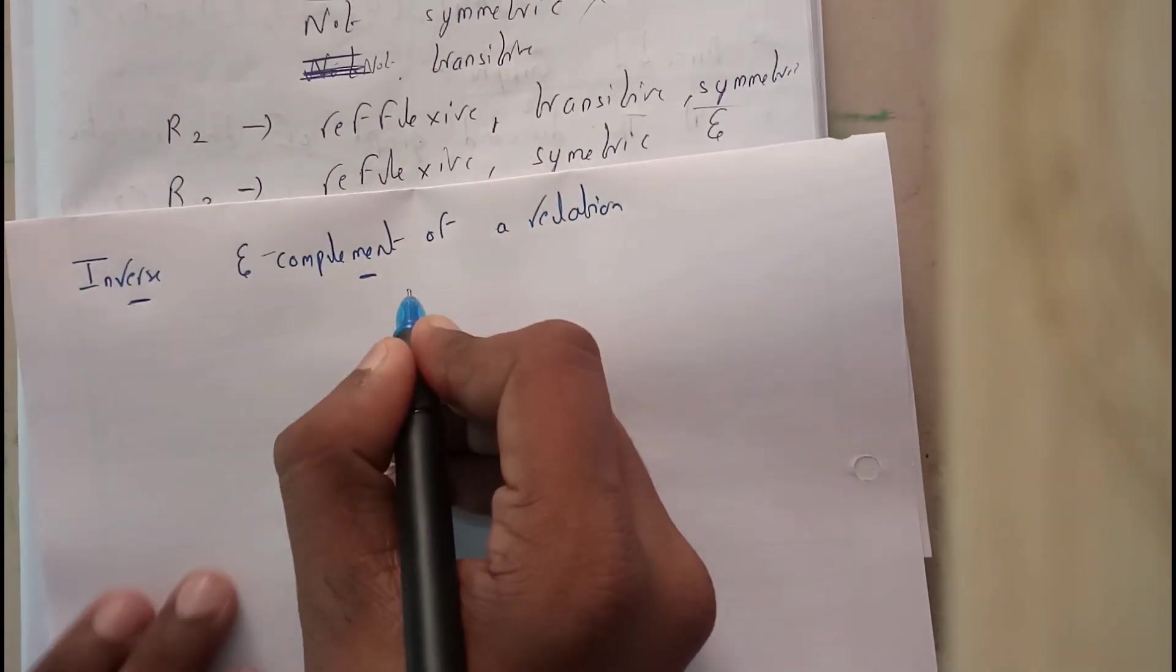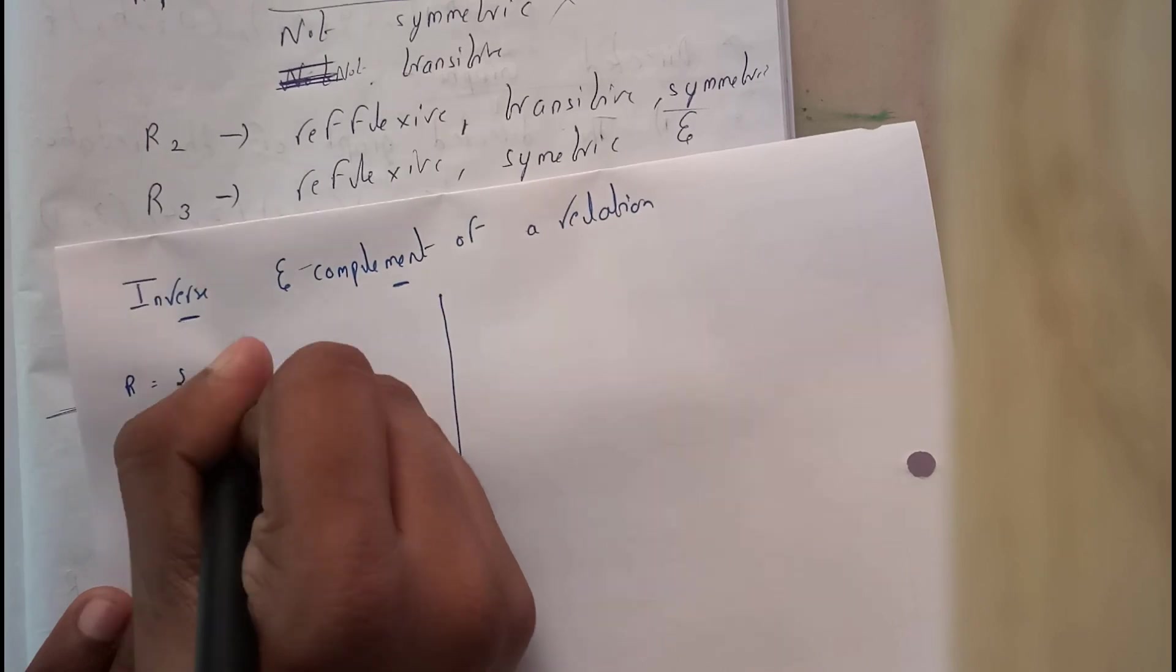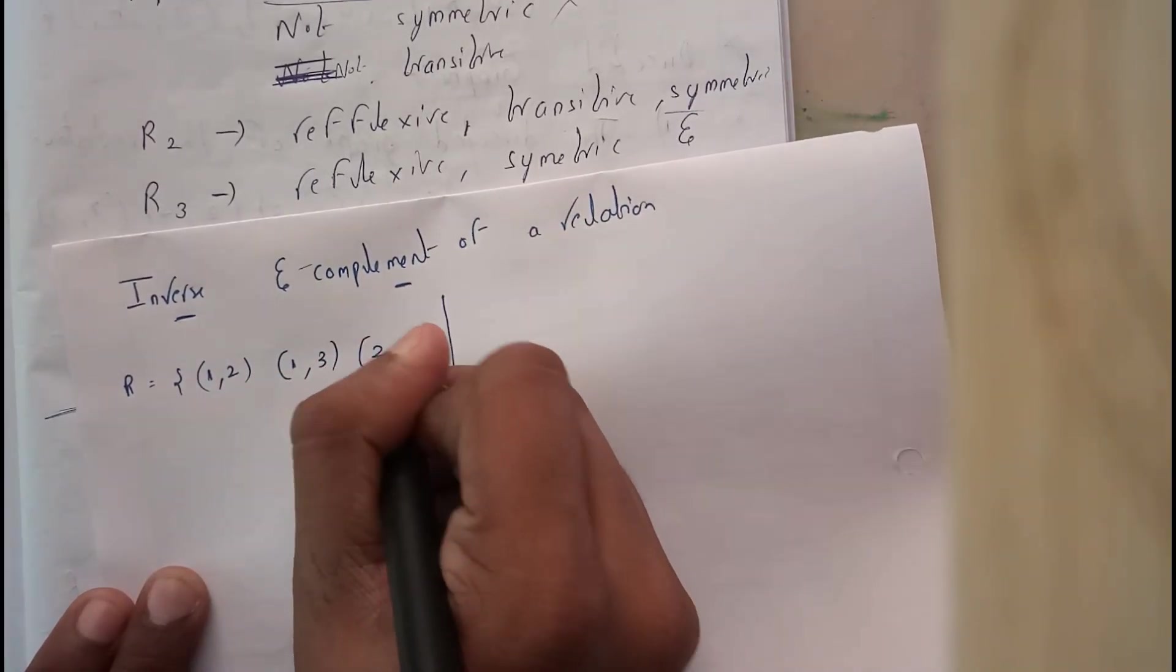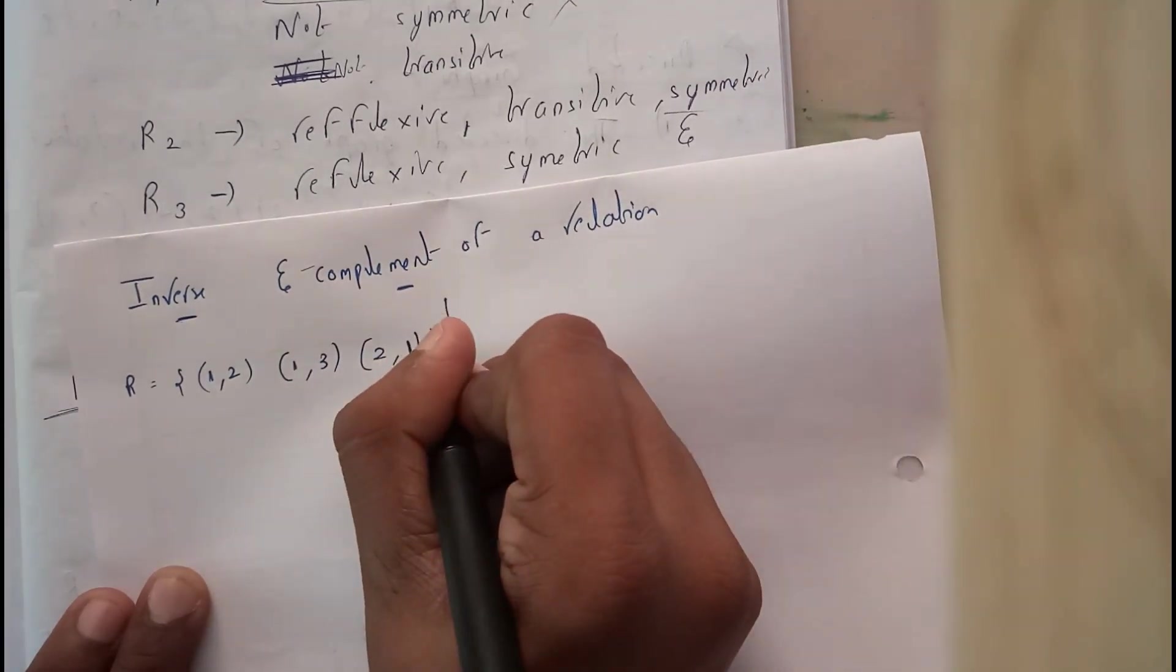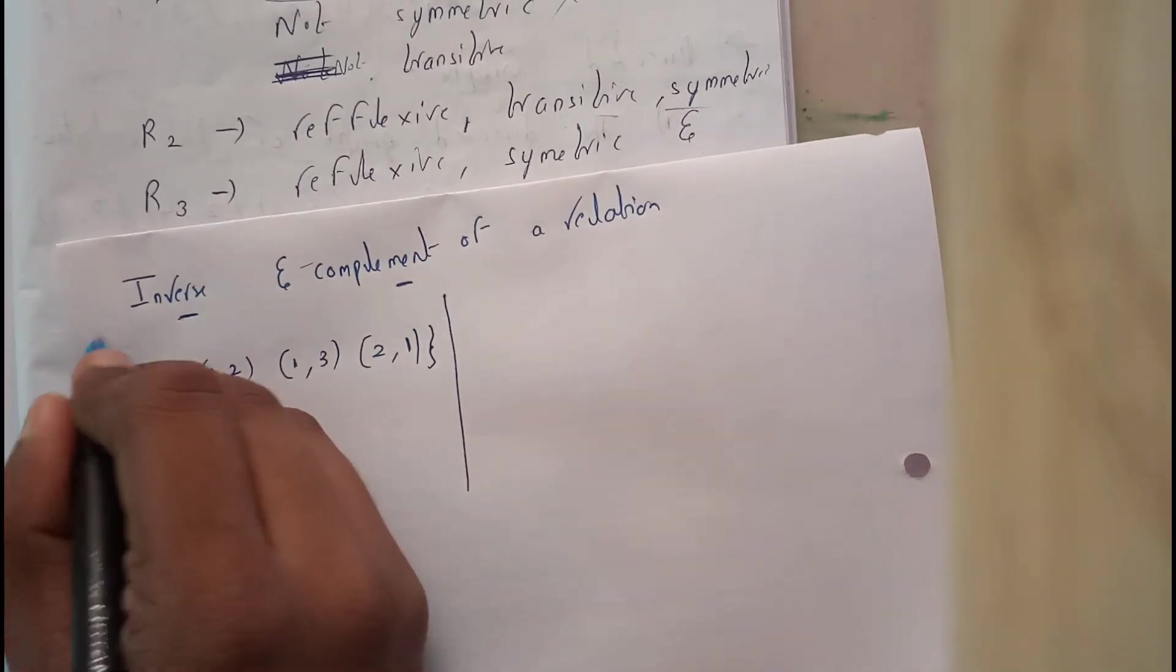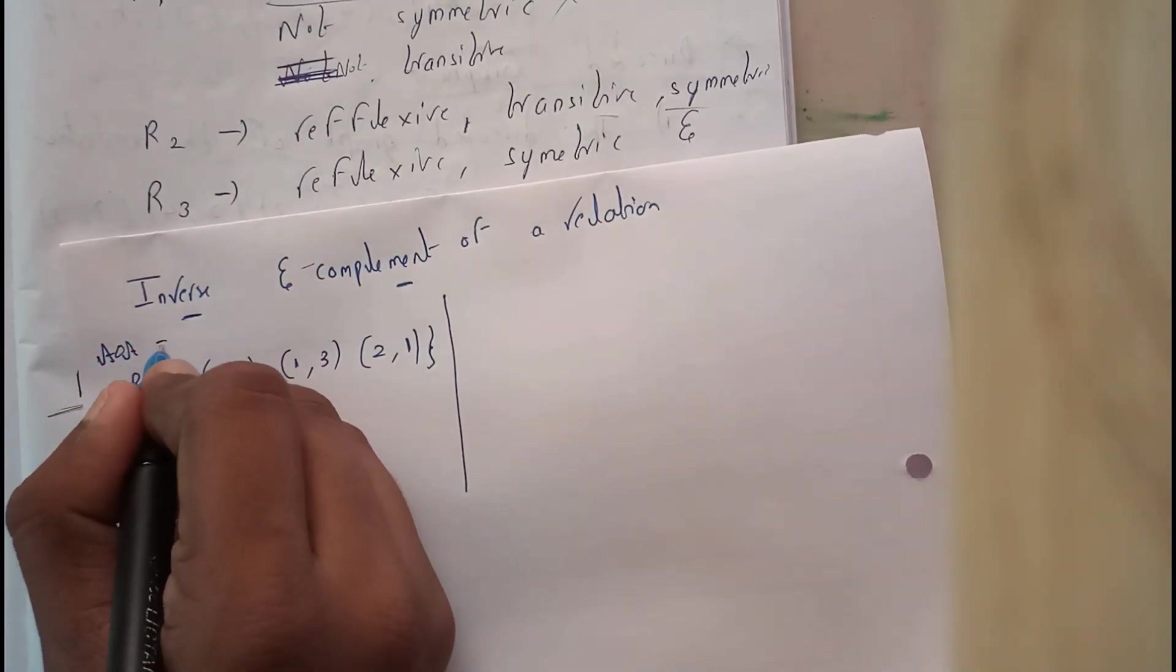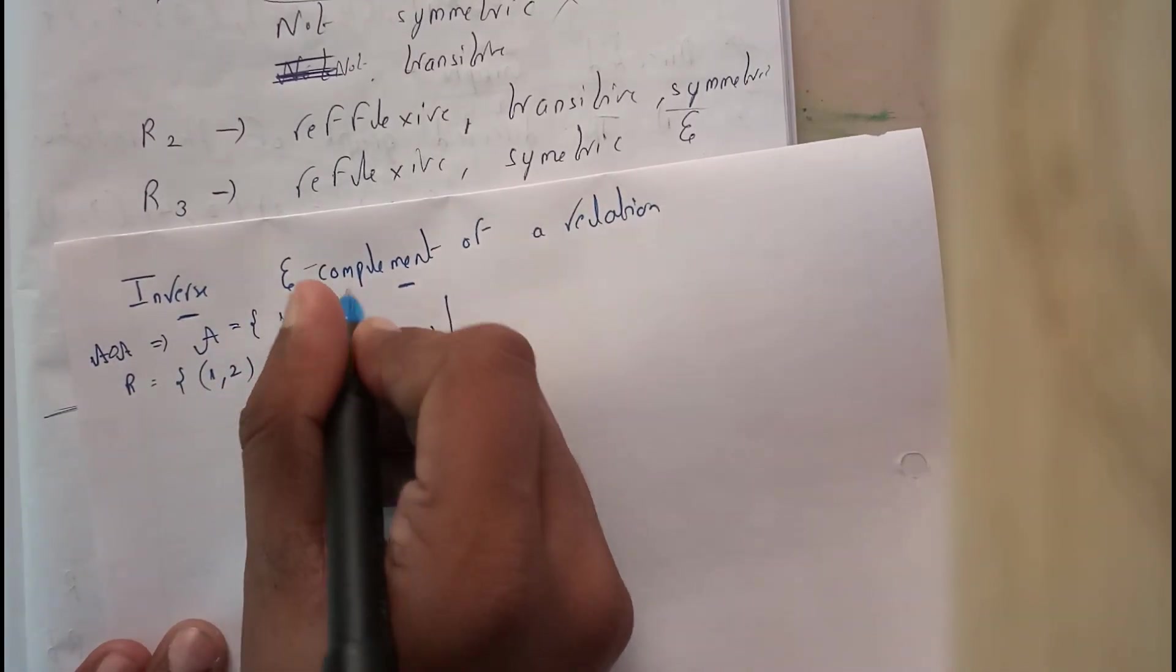Let us assume that R equals (1,2), (1,3), and (2,1). These are the only elements in R, where R is the relation between A and A, where A equals {1, 2, 3}.